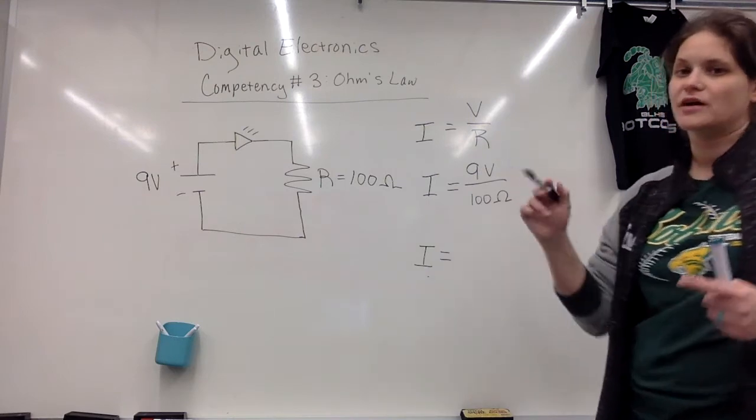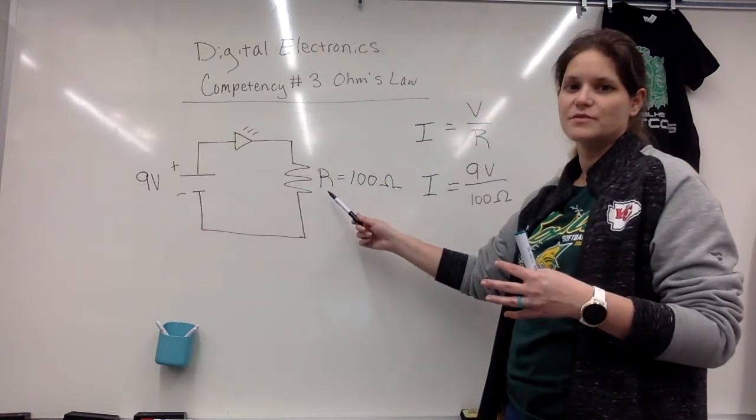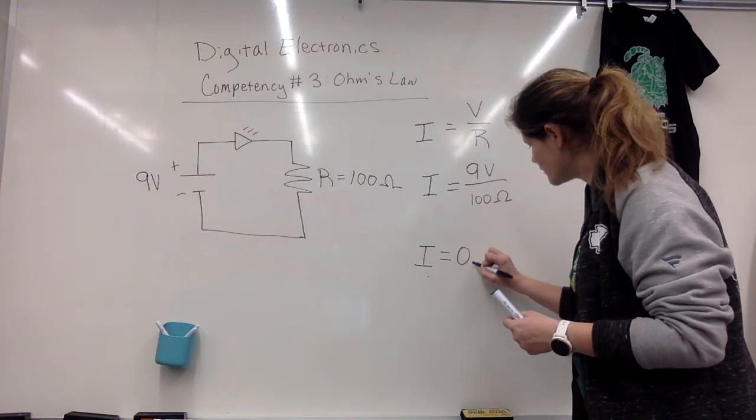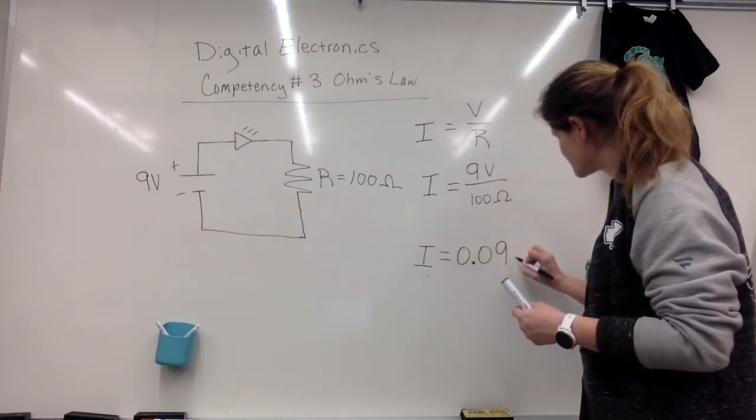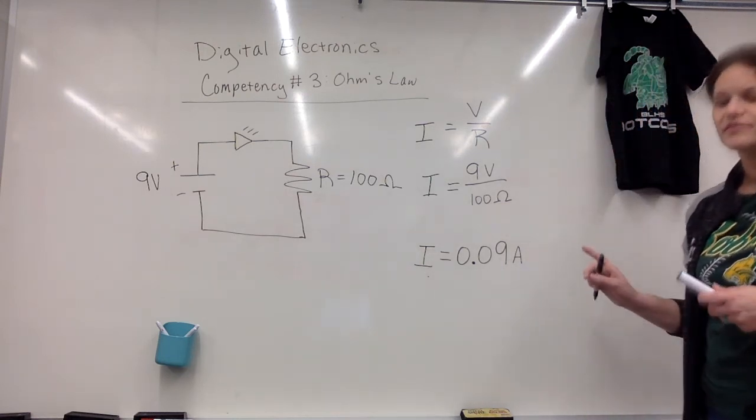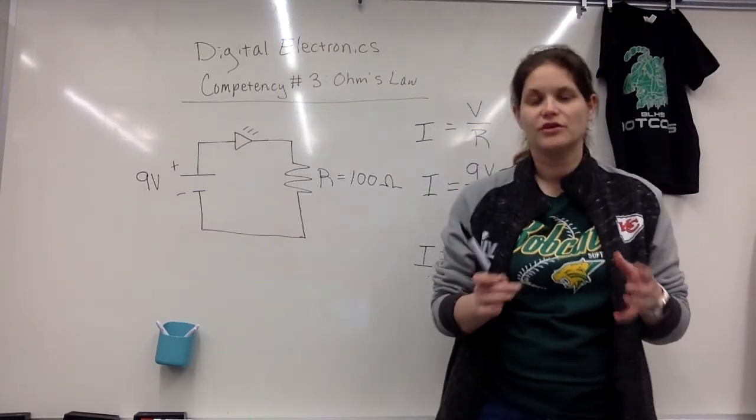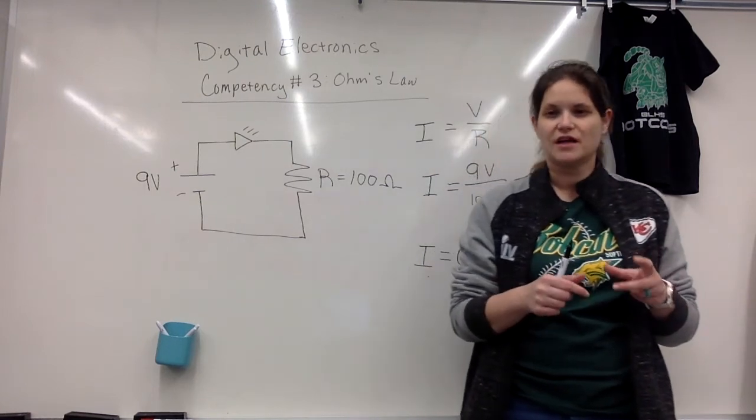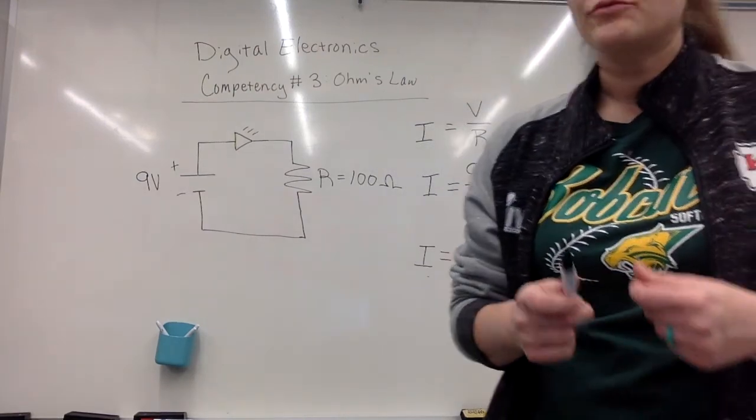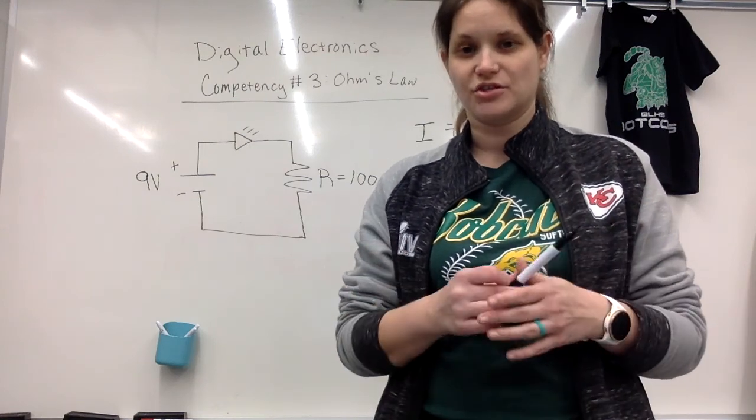Because remember when we were talking about the units for things, voltage was volts, resistance was ohms, and current is amps. So this is 0.09 amps, which we would just give a letter A like that. Now you're often going to see, and especially if you even look at your multimeters, you're going to see that current is not usually given to you in amps. It's usually given to you in milliamps. So I actually really need you to understand how to convert from amps to milliamps. I'm going to show you that next. I'll see you next time.